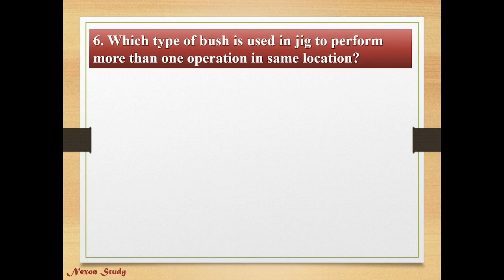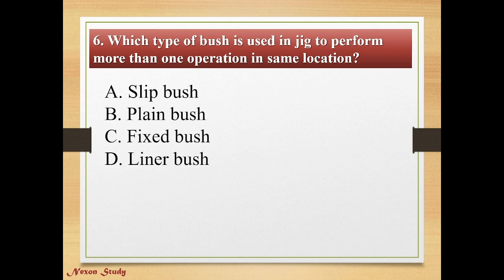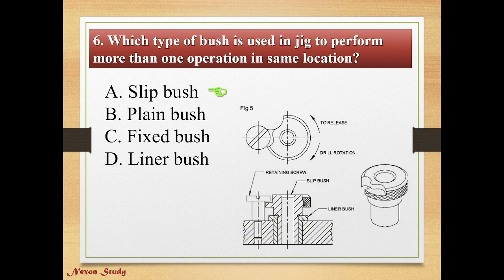Question: Which type of bush is used in a jig to perform more than one operation in the same location? Options: slip bush, plane bush, fixed bush, linear bush. Right answer is slip bush. This is a slip bush.